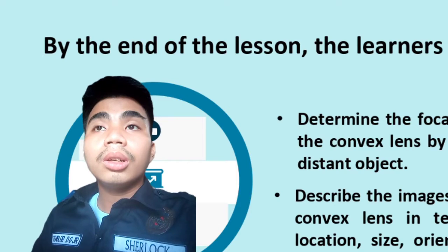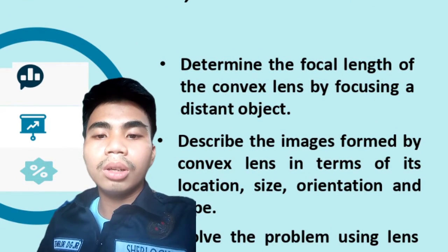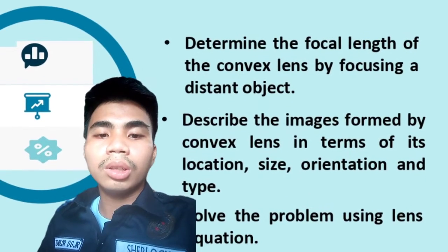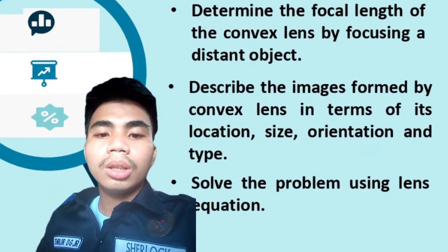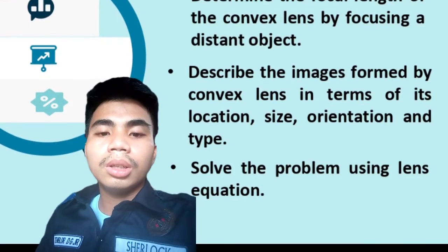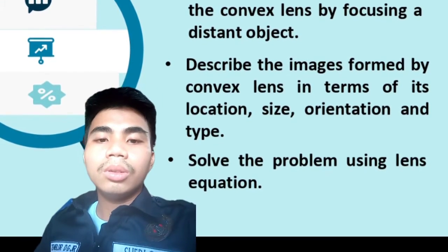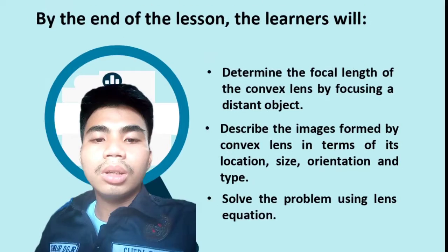By the end of the lesson, learners will determine the focal length of the convex lens by focusing on a distant object, describe the images formed by convex lens in terms of its location, size, orientation, and type, and solve the problem using lens equation.